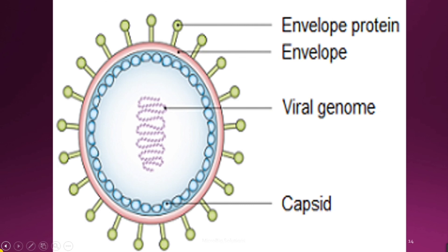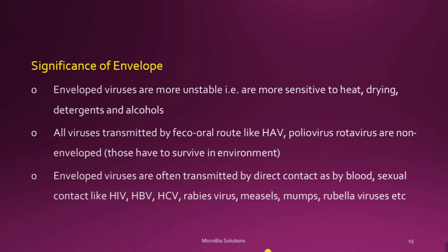Here in this picture, you can see the complete structure of a virus. At the center is the genetic material or the viral genome. Covering that is the capsid — the individual round-like structures are called capsomeres, which contribute to the capsid. Covering the capsid is the envelope, which is a lipoprotein layer. Upon the envelope are the envelope proteins or glycoproteins, which help the virus in gaining attachment to the host cell.